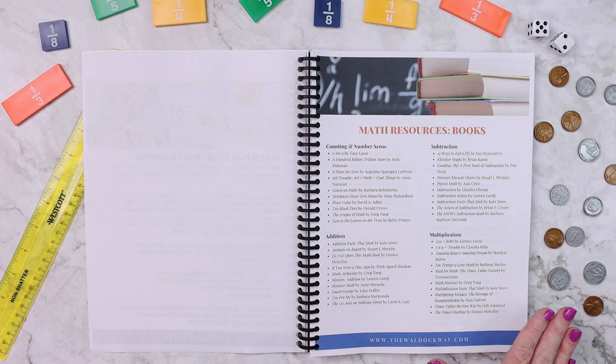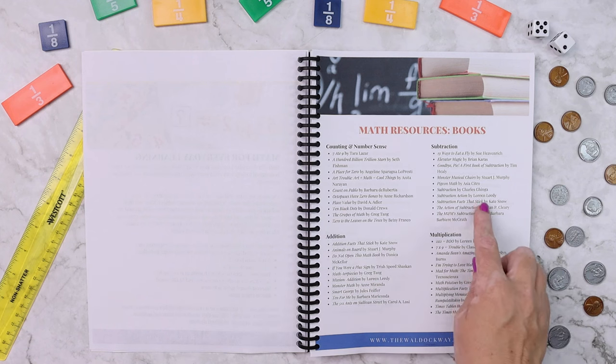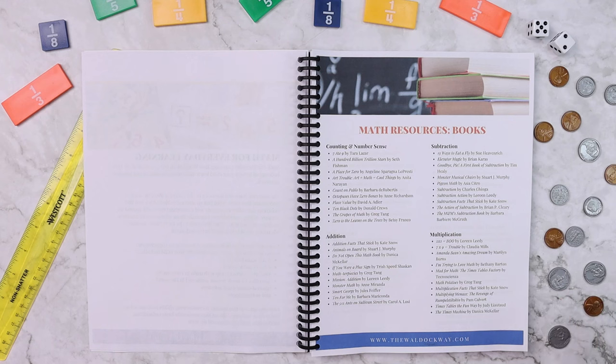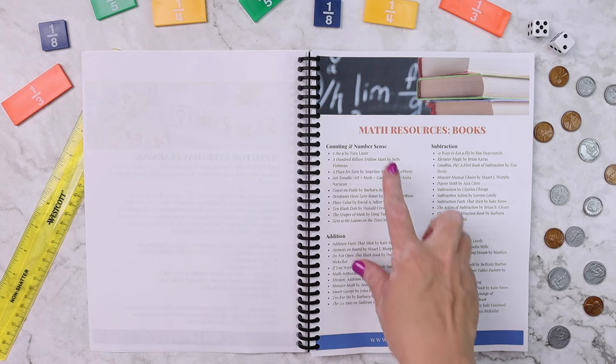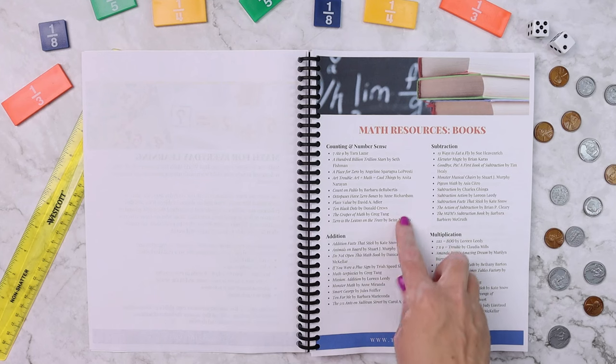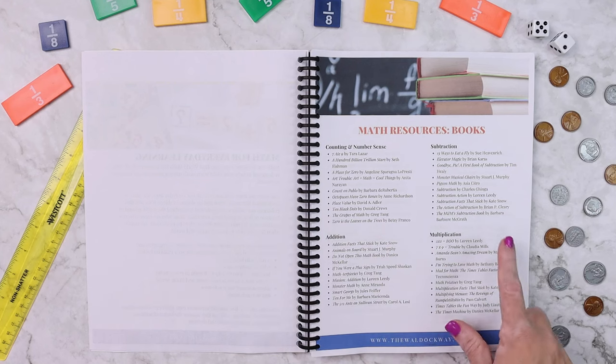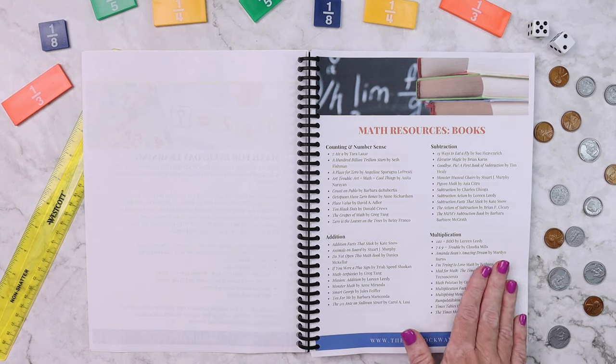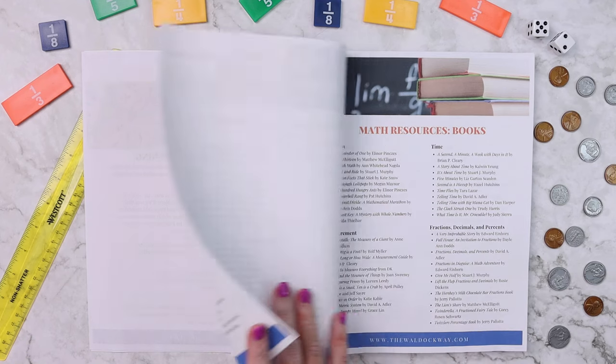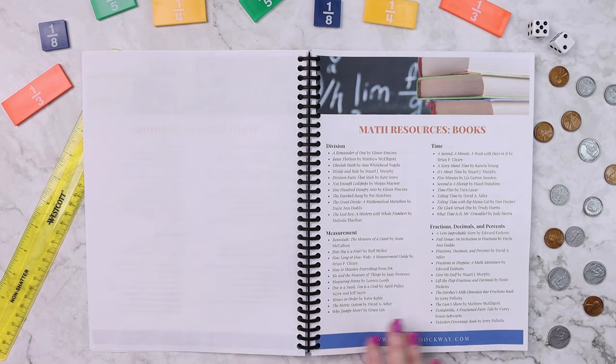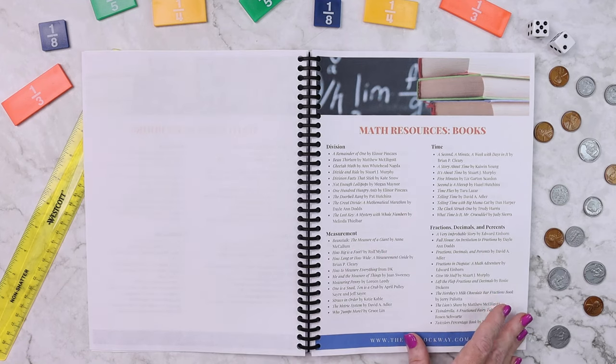Here's the fantastic thing about this book list. I did my best to split it by concept. So it's super easy for you to say, we're going to be learning about counting in our homeschool, or that's what I want to work on with my child. Here are the books that you're going to read for that concept. Maybe you want to work on multiplication. Here are the books for multiplication, division, time, measurement, fractions, decimals, and percents.